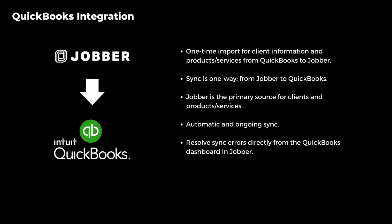Let's discuss how this new integration differs from the previous one. With the new integration, there's a one-time import for client information and products and services from QuickBooks to Jobber. The sync is now one way from Jobber to QuickBooks, making Jobber the primary source for clients and products. Additionally, the sync process is now automatic and ongoing, eliminating the need for manual syncing.